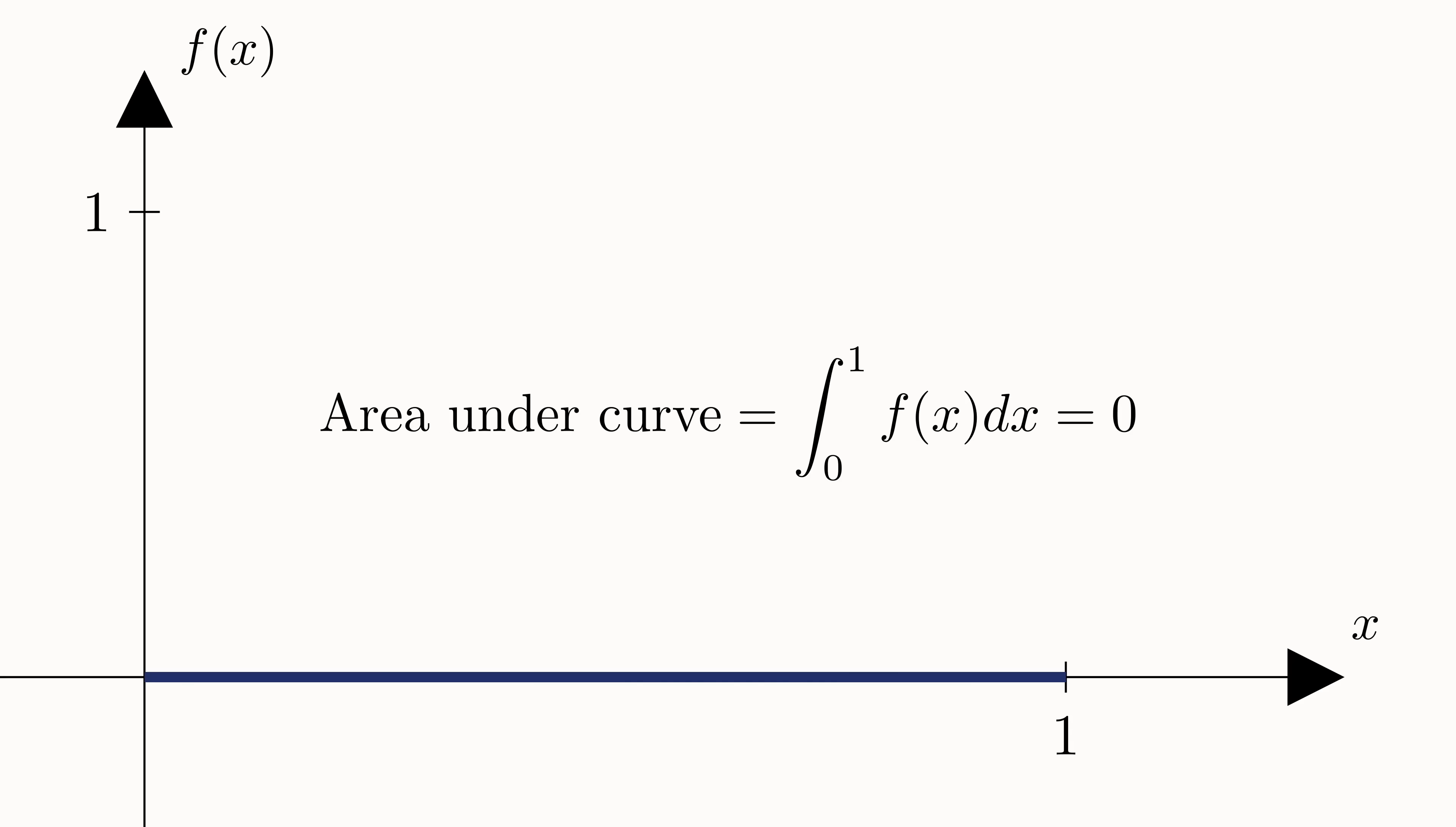We'll now build a sequence of functions out of it. So let's call this function f0. f1 will be defined similarly, except at the points x equals one and x equals zero, f1 will equal one. Is this still Riemann integrable?